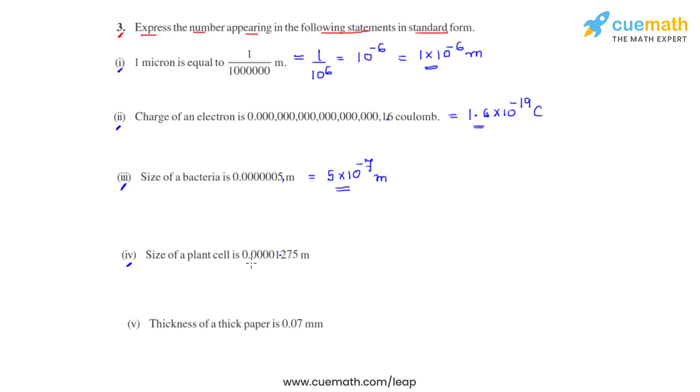It is to move by 5 places towards right. So the answer will be 1.275 times 10 raised to negative 5.